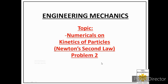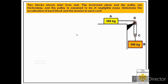Welcome students. Today we will solve the second problem on kinetics of particles based on Newton's second law. We are given one statement: two blocks shown start from rest, the horizontal plane and the pulley are frictionless, and the pulley is assumed to be of negligible mass. Determine the acceleration of each block and the tension in each chord.